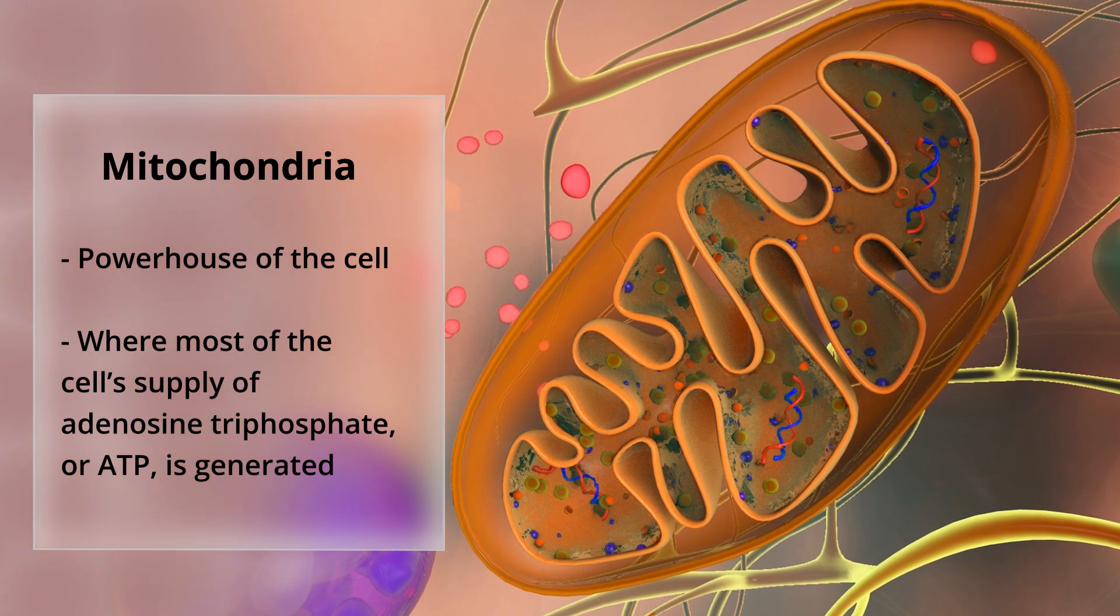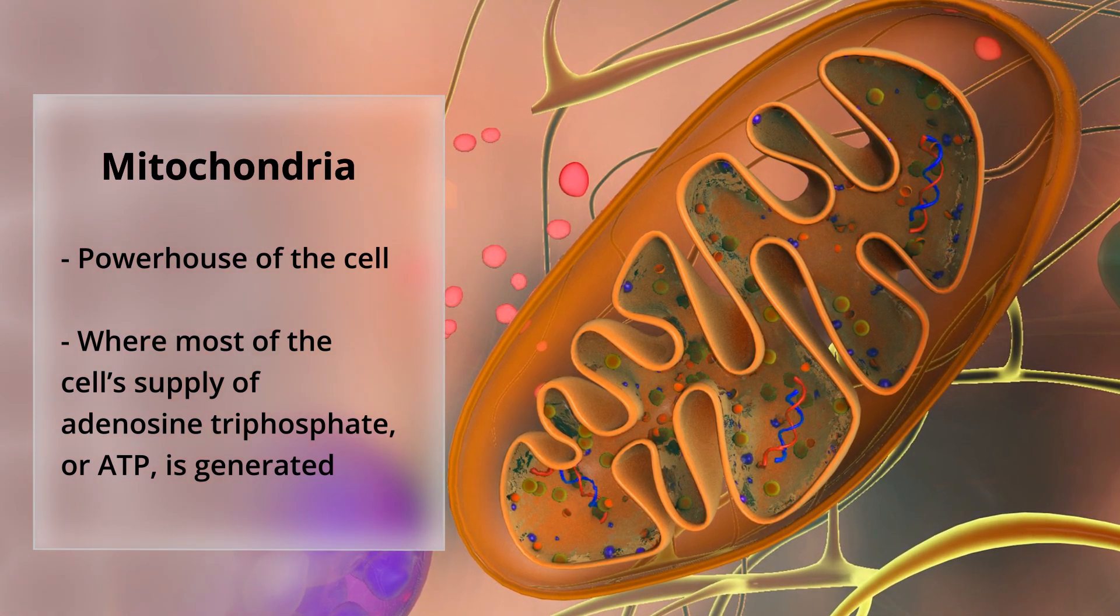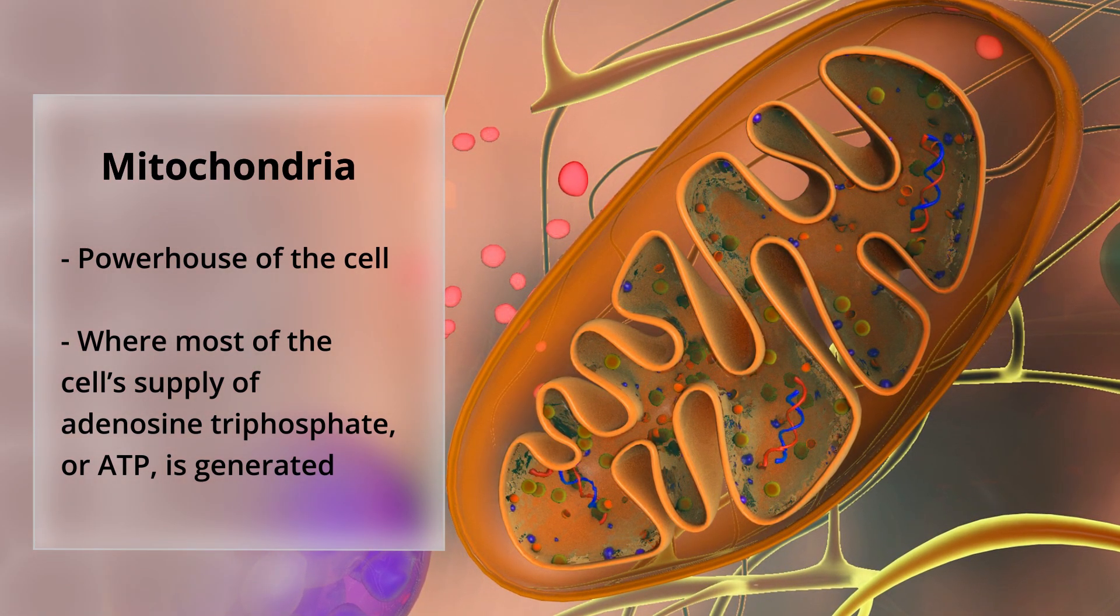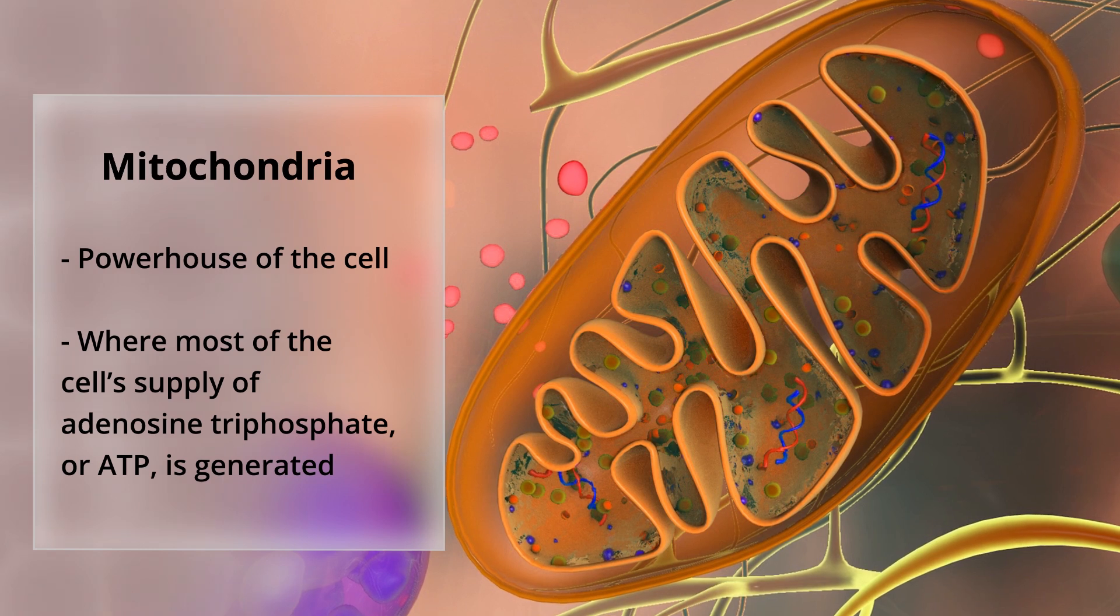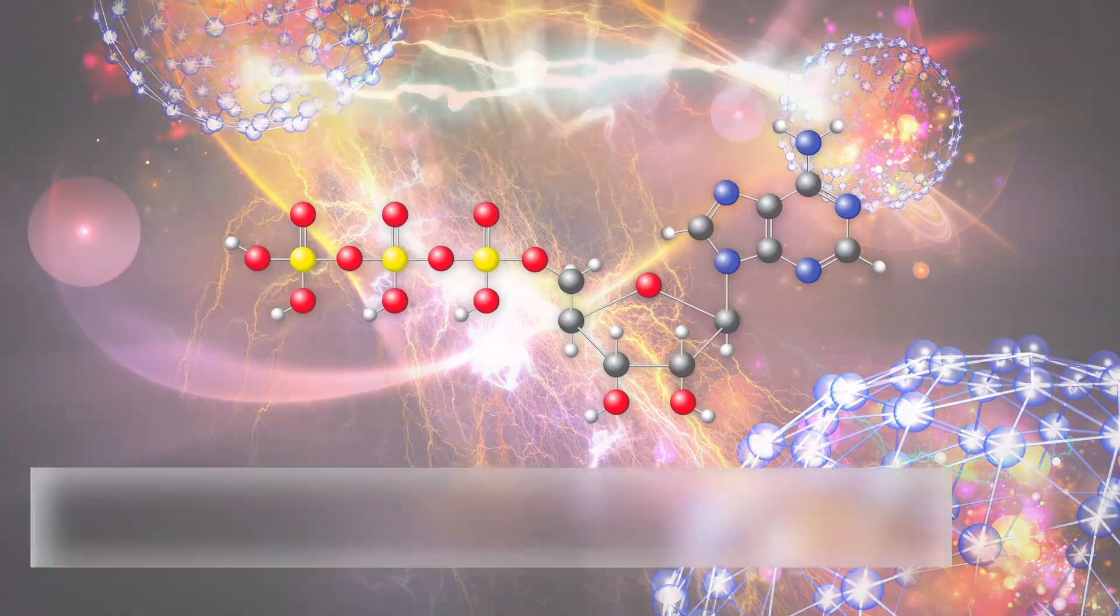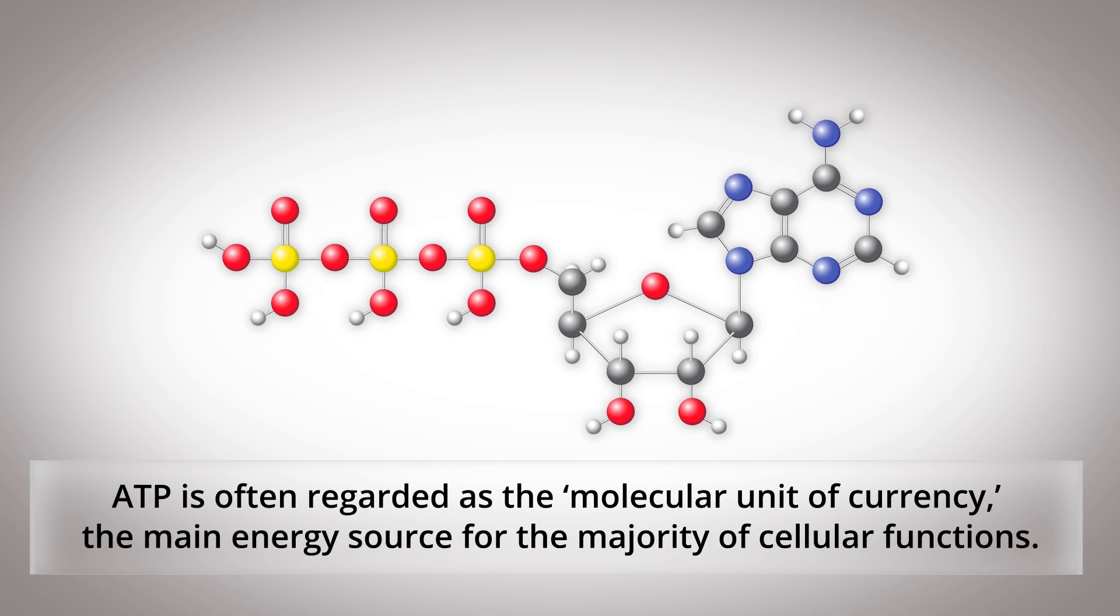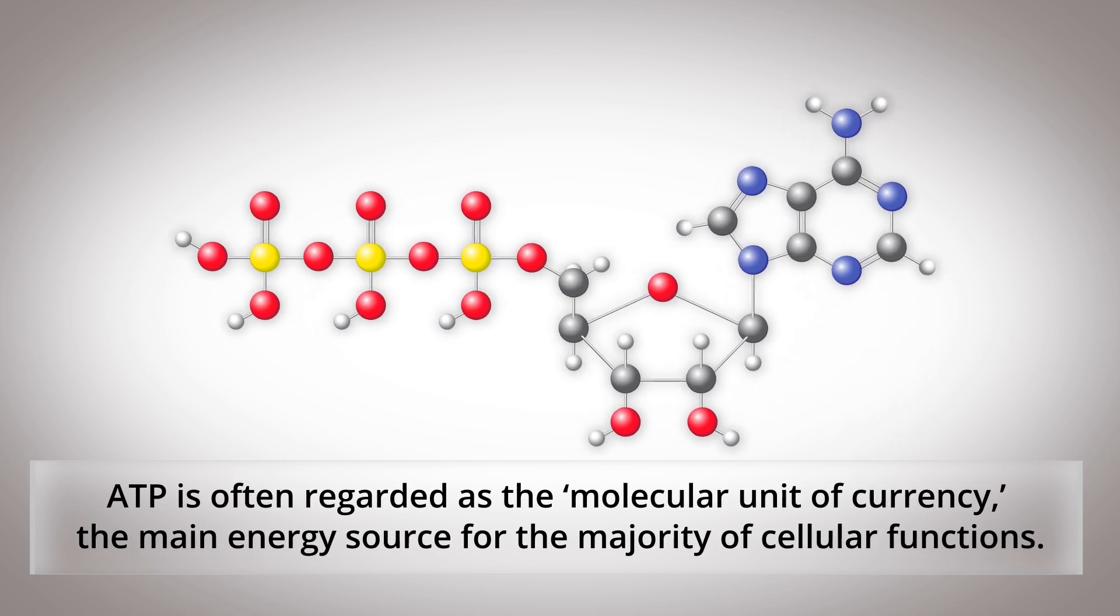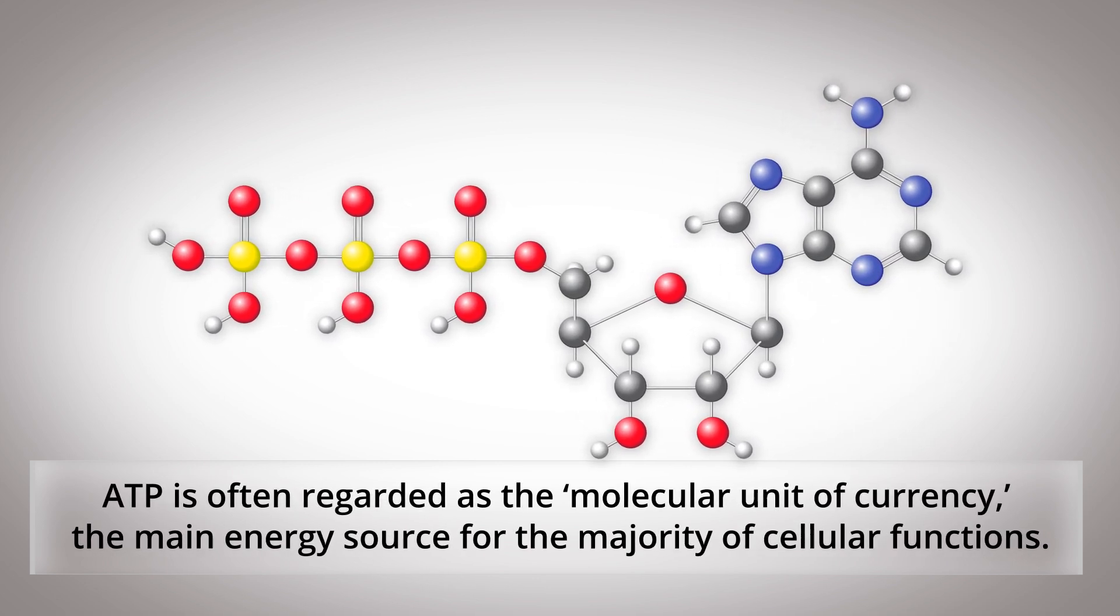The mitochondria are the powerhouse of the cell, the organelle where most of the cell's supply of adenosine triphosphate, or ATP, is generated. ATP is often regarded as the molecular unit of currency, the main energy source for the majority of cellular functions.